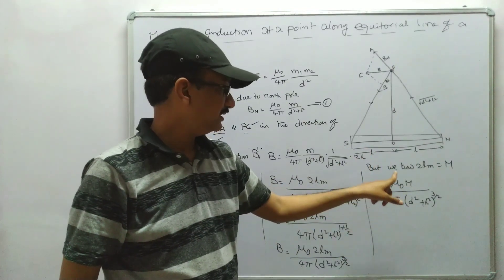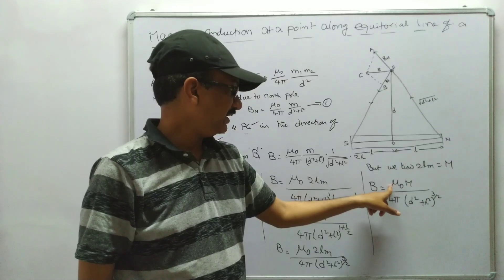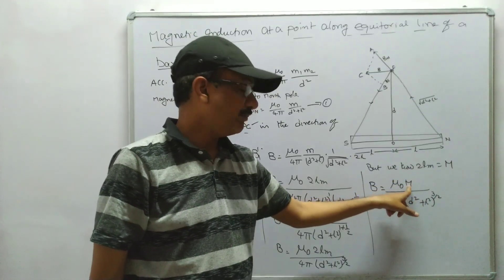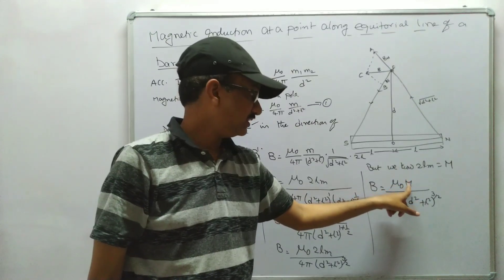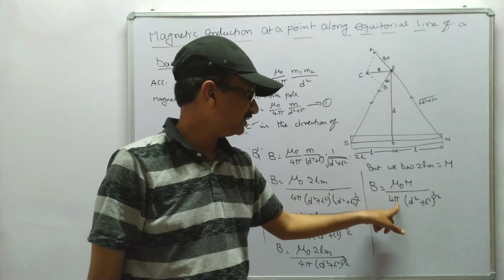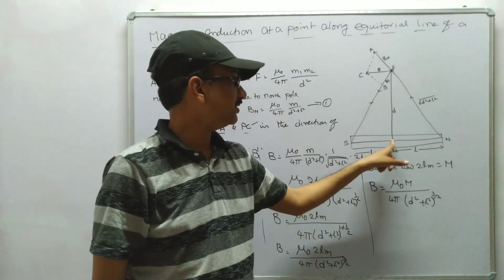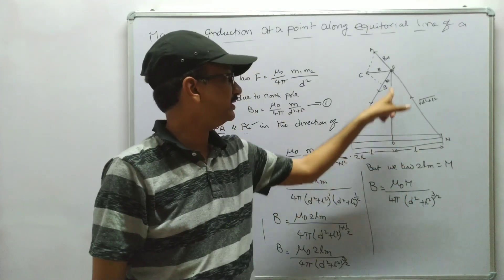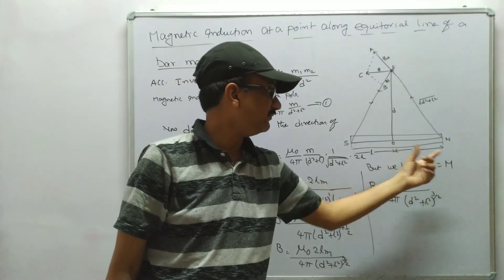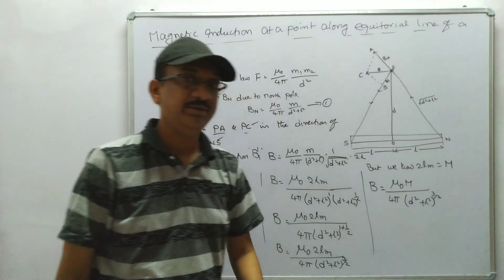Here, μ₀ is the permeability of free space, M is the magnetic moment or torque, 4π equals 4 × 3.14, d is the distance from the origin of the magnet to the point P, and L is the half-length of the magnet.